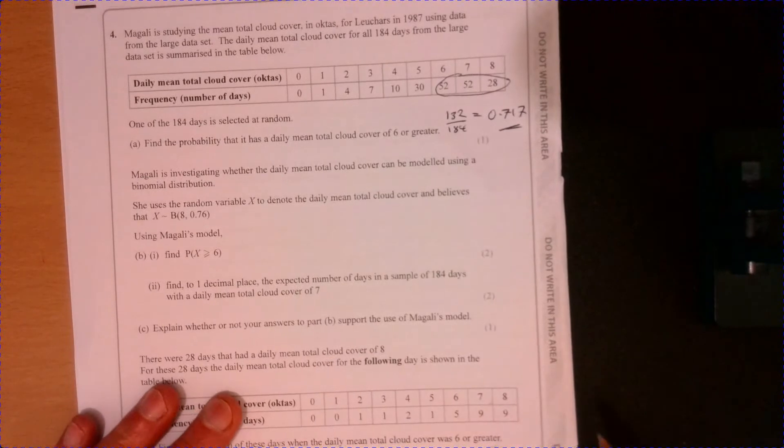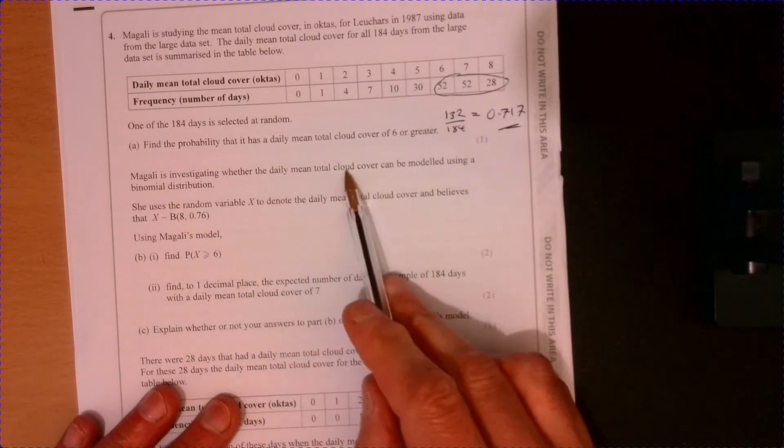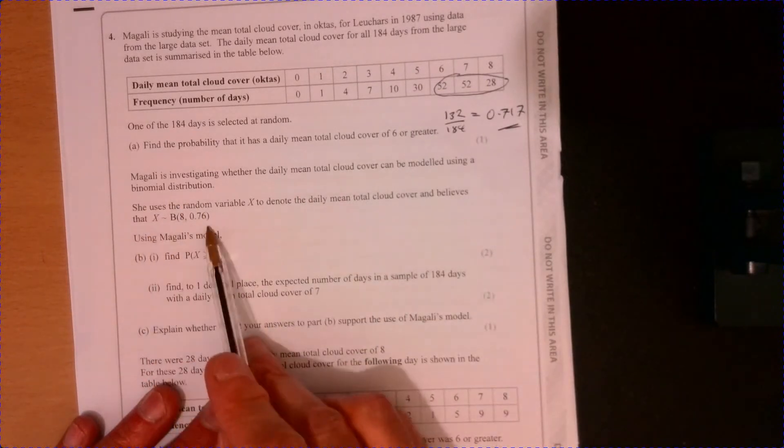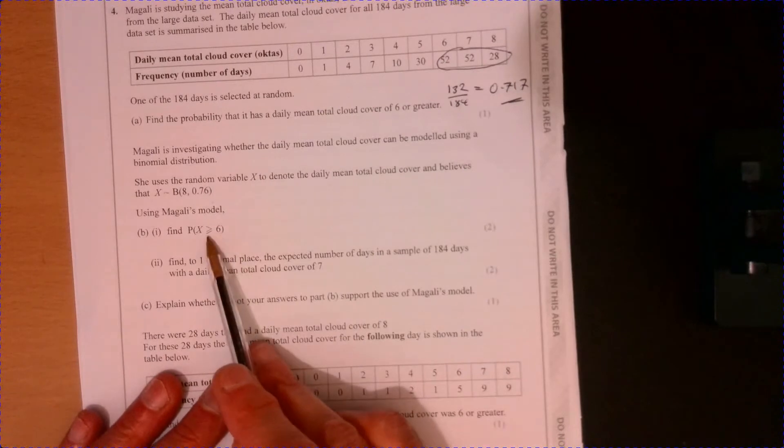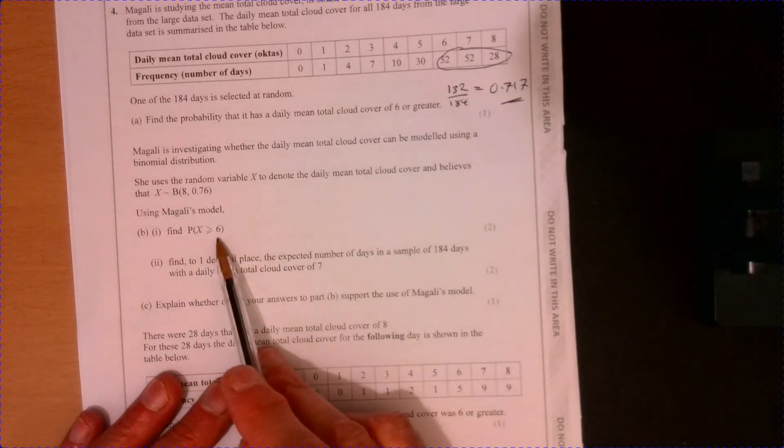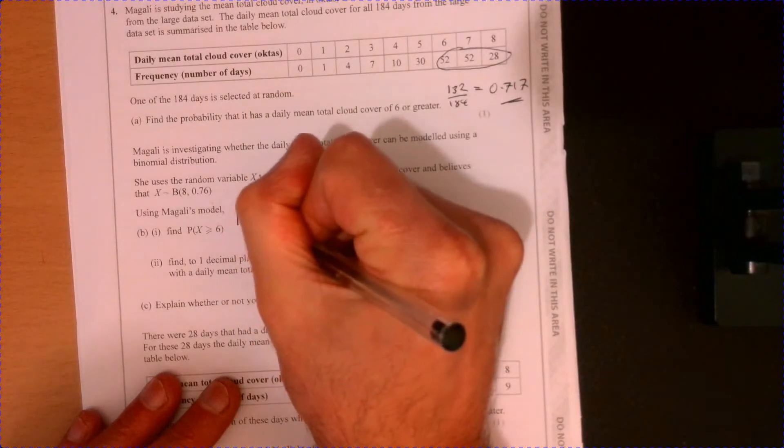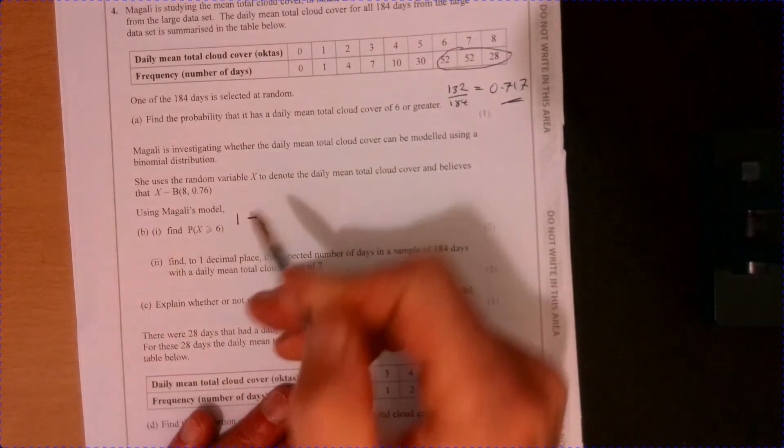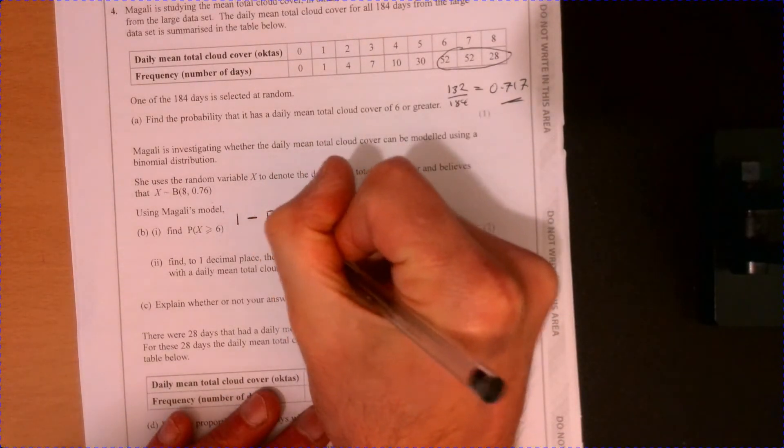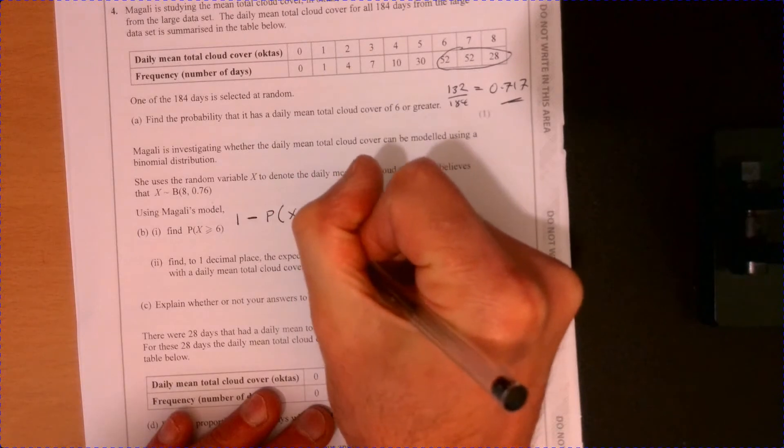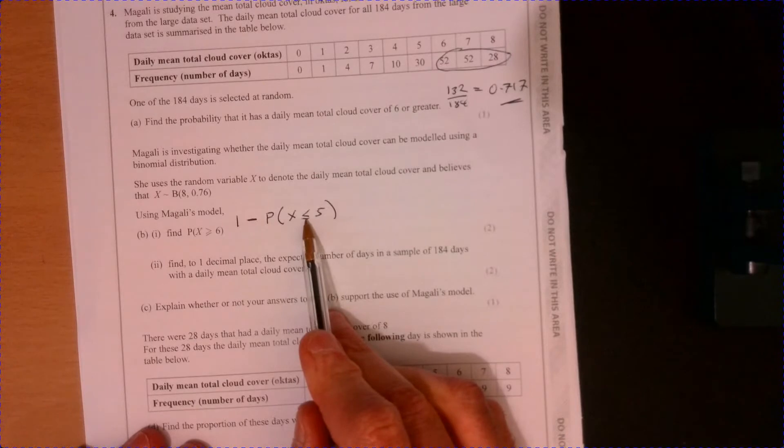Right, now part B. We're investigating whether the daily mean total cloud cover could be modeled using a binomial. And we need to find the probability that x is more than or equal to six. Your calculator works on a cumulative basis, so we can work out anything coming up to it quite easily on my calculator.